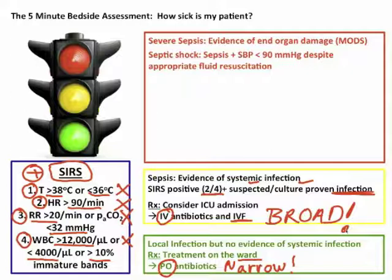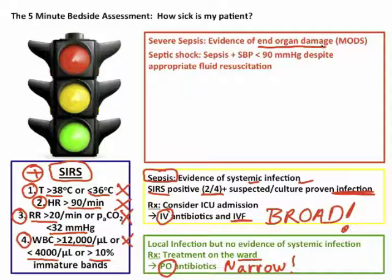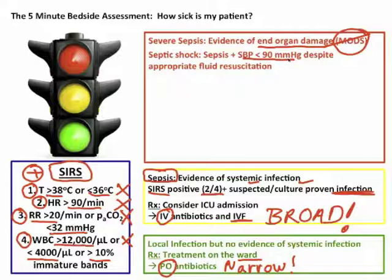Severe sepsis and septic shock are two additional definitions. Sepsis was SIRS criteria plus infection. Severe sepsis adds evidence of end-organ damage, and if more than one organ is affected you have multi-organ dysfunction syndrome — MOTS. Septic shock is defined as sepsis plus hypotension — systolic blood pressure less than 90 — despite appropriate fluid resuscitation: you gave two liters of IV fluids over the last hour and the patient is still hypotensive.